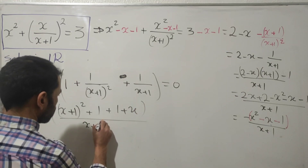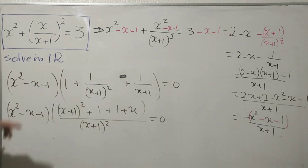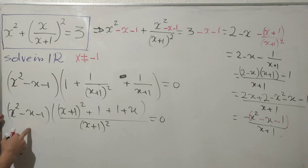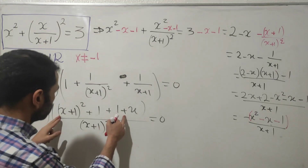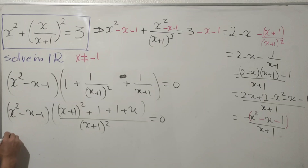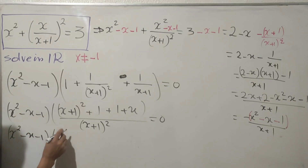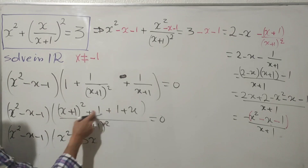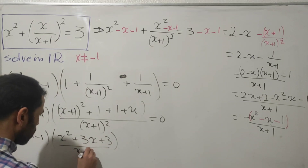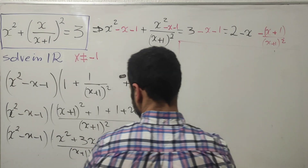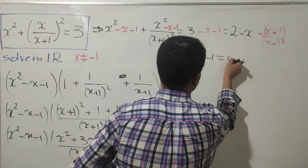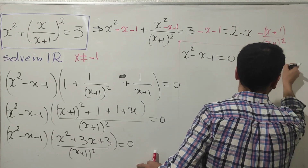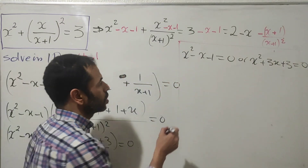Since we have x plus one in the denominator, x must be different from minus one. Factoring the bracket over the common denominator (x plus one) squared, we get x squared minus x minus one times the quantity (x plus one) squared plus one plus (x plus one), all over (x plus one) squared, equals zero. Simplifying the numerator gives us x squared plus three x plus one plus one plus one, which is x squared plus three x plus three. So either x squared minus x minus one equals zero, or x squared plus three x plus three equals zero.